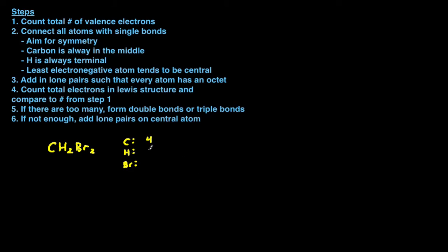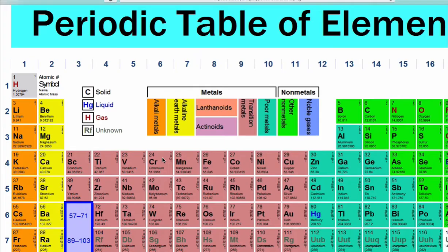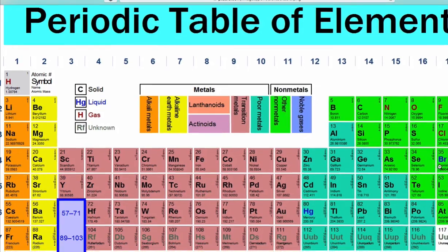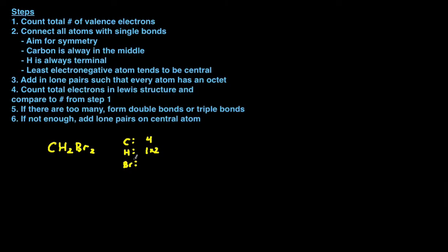Hydrogen has one valence electron, but because we have two we multiply it by two. Bromine has seven valence electrons because it's in the seventh column of the periodic table — it's a halogen — and we have two of them, so multiply that by two. Adding together: four plus two plus fourteen gives us a total of twenty valence electrons. That's step number one.